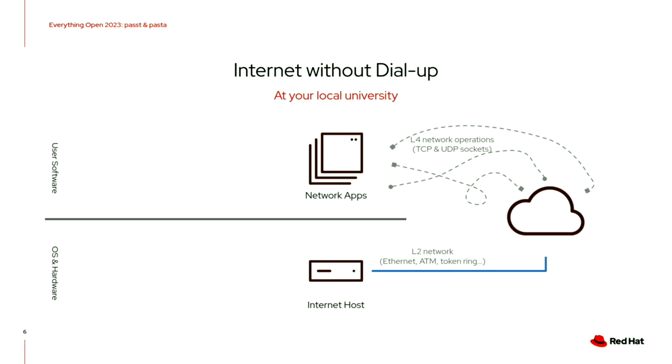Meanwhile, at the university which does have internet, they've got an internet host with some kind of real network connection. Even in the 90s, it was probably Ethernet. You could run whatever network applications — a Gopher server, email, FTP, IRC, various things. They connect out to the world primarily through TCP and UDP sockets going over the L2 Ethernet or whatever network. There's various levels of router and so forth, but that's not what this talk is about.